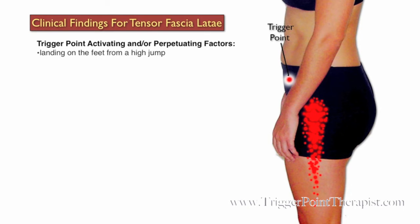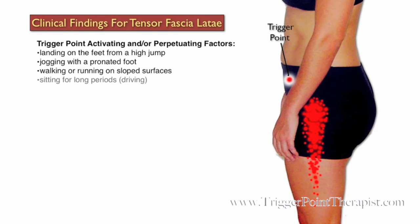Some activating and perpetuating factors for trigger points in the tensor fasciae latae muscle include landing on the feet from a high jump, jogging with a pronated foot, walking or running on sloped surfaces, sitting for long periods of time as when driving, and sleeping in the fetal position.